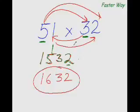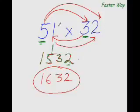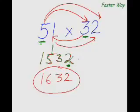Some things are easier said than done; this is one thing which is easier done than said. All you need to do is remember this arrow pattern, and everything else will take care of itself. Multiply the first digit with the first digit and write the product, then multiply the first digit with the other digit and add the cross product, then multiply the last digits. So the answer is 1632. Let's practice more examples.